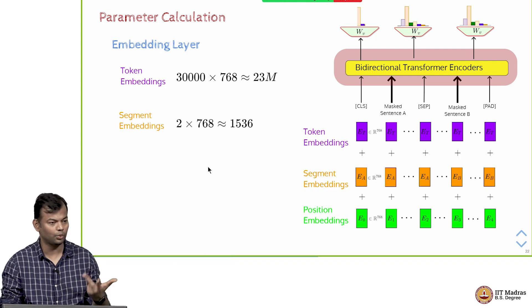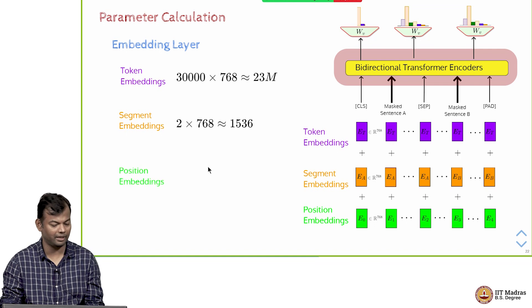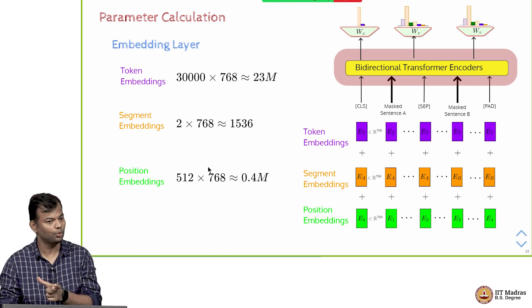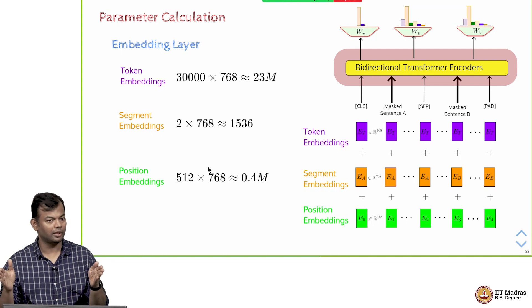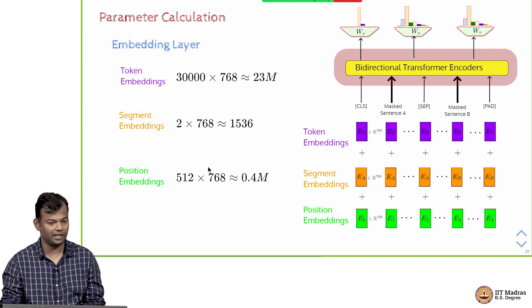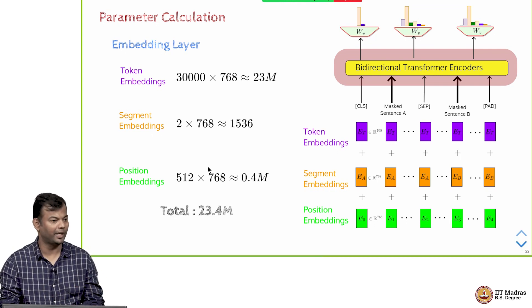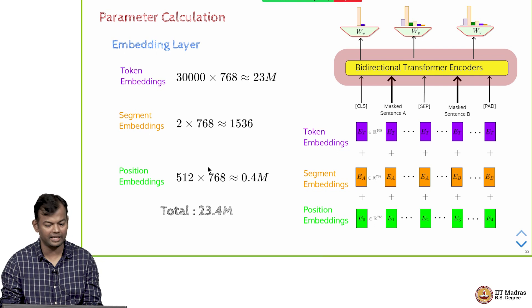Segment embeddings - as I said there are only two segment embeddings, so it does not have many parameters. Position embeddings: you have 512 positions because that is the max sequence length you have, and you have 768 dimensional representations, so another 0.4 million. This is roughly 23.4 million, this is the embedding layer.